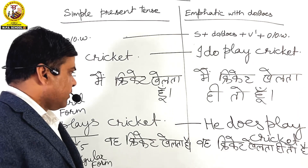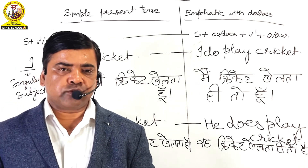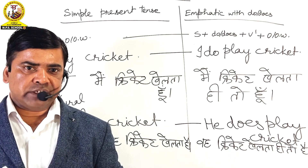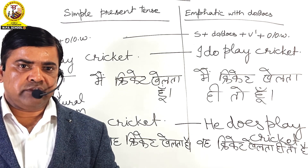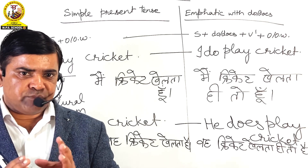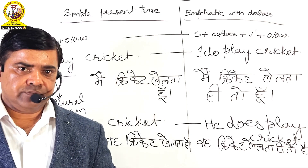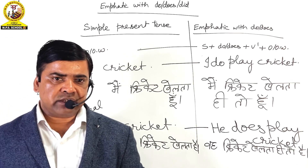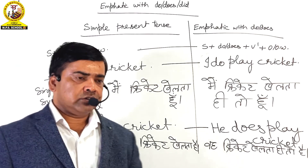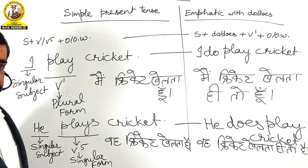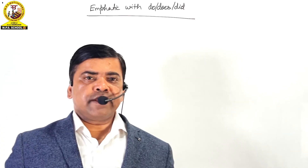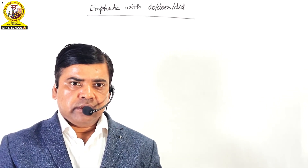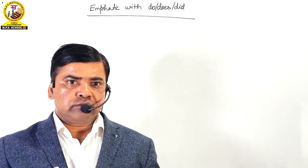So friends, I hope you would have understood how to make emphatic sentences in simple present tense using do or does. I would like to discuss some more examples, but before that I would suggest you to take a screenshot or write them down in your notebook. Now I am going to write down a few sentences in simple present tense and then I will write down their emphatic forms.